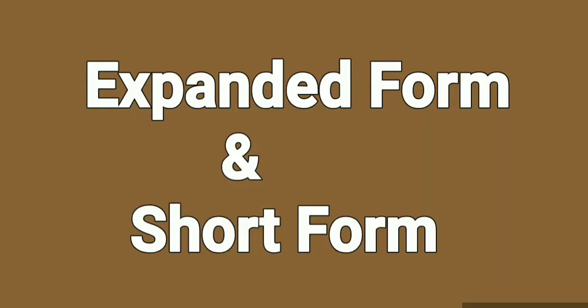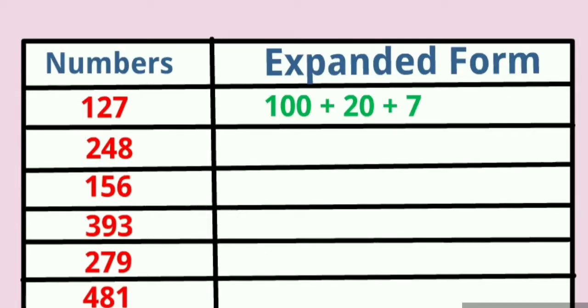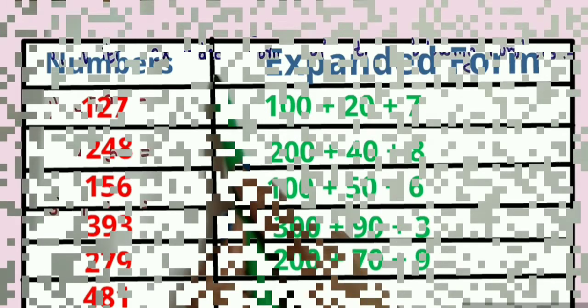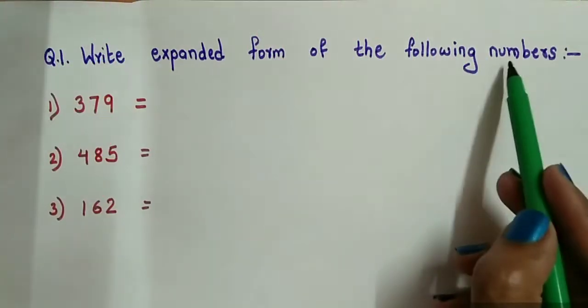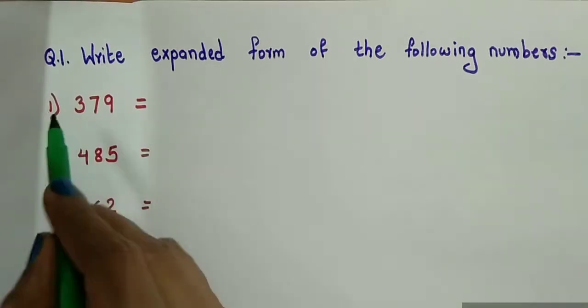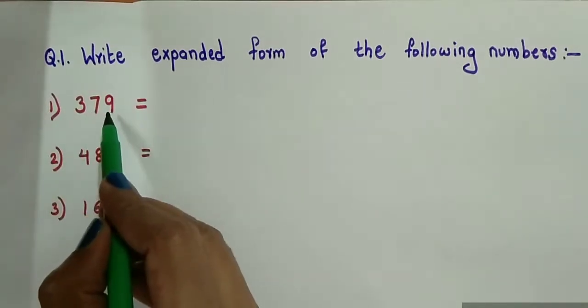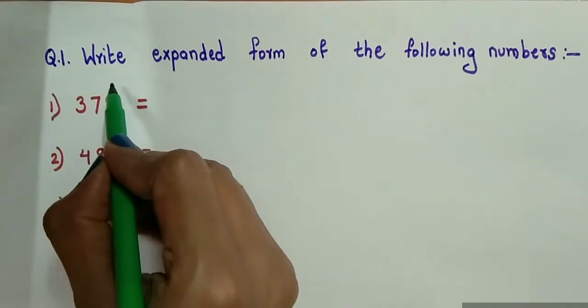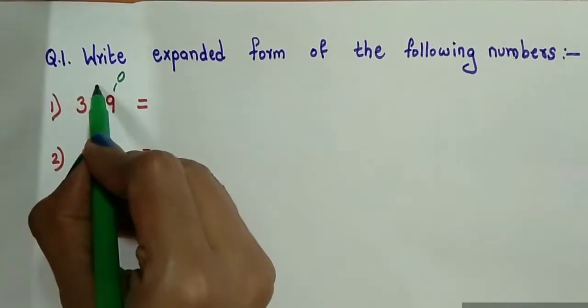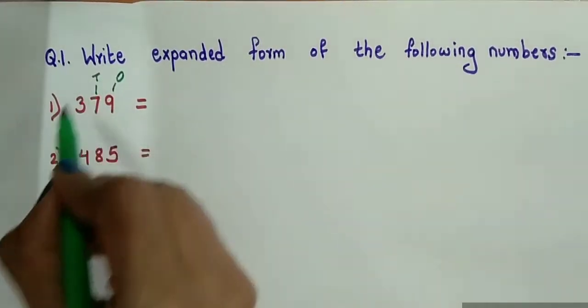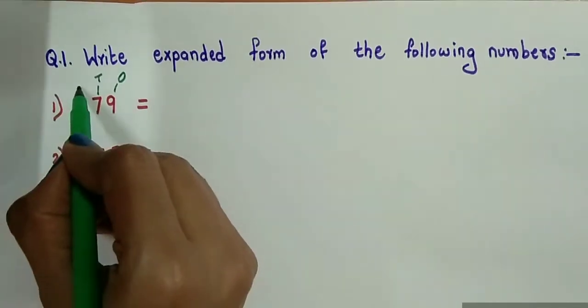Hello students, today in this video we will be learning expanded form and short form, so let's start. Write expanded form of the following number 379. 9 is standing under 1's place, 7 is at 10's place, and 3 is at 100's place.